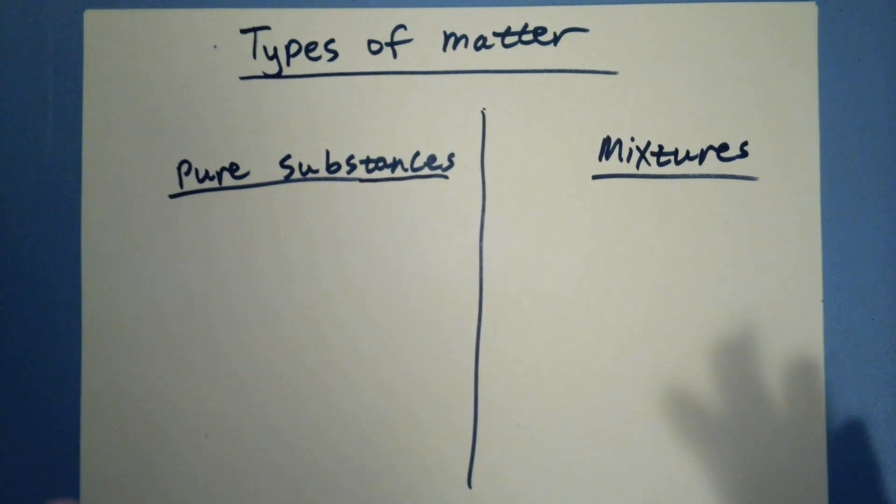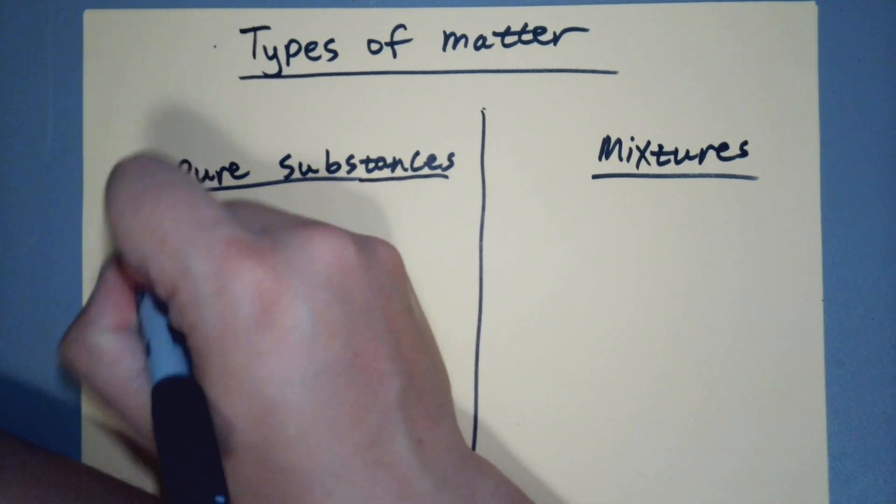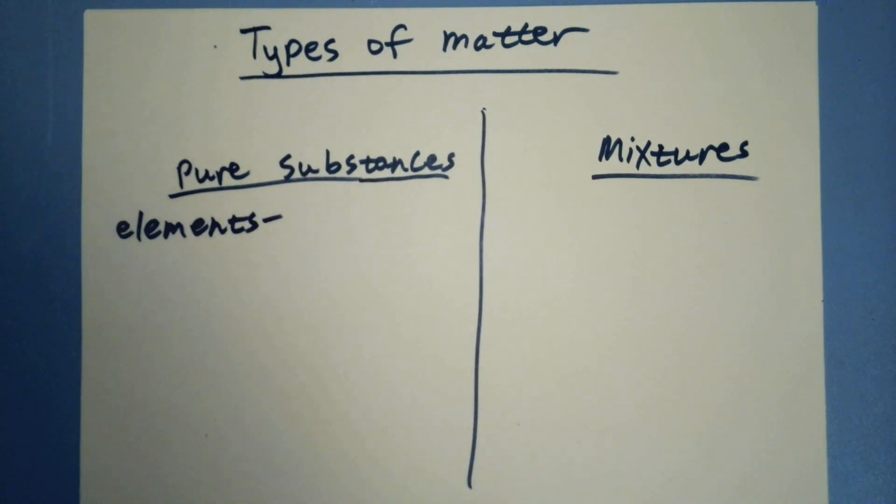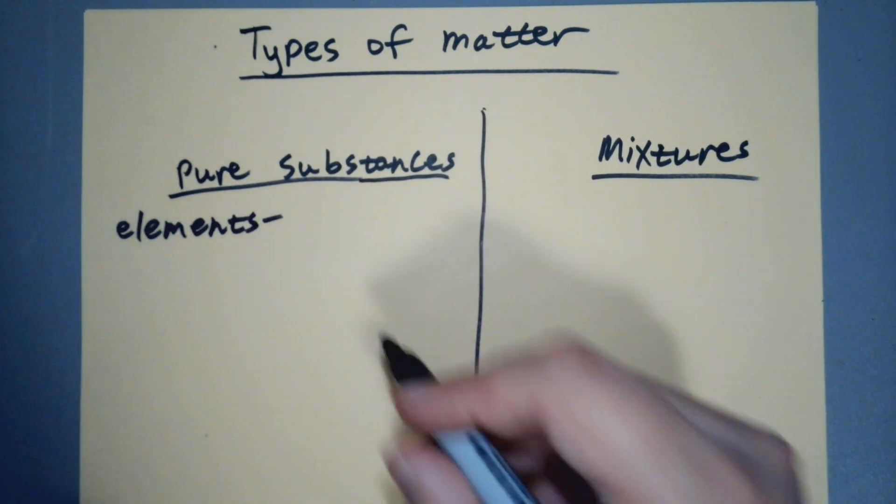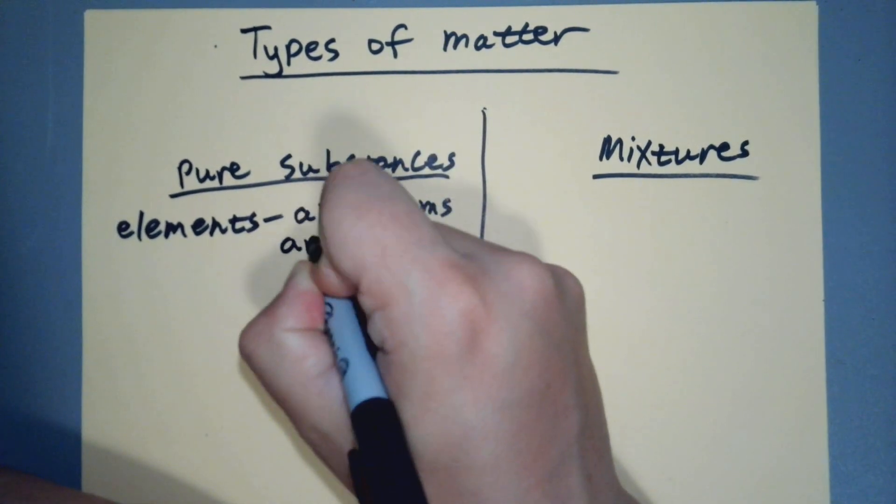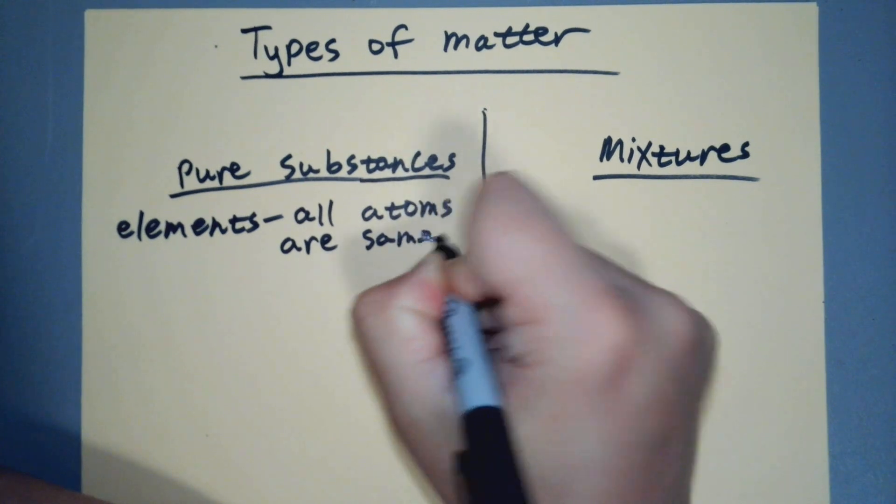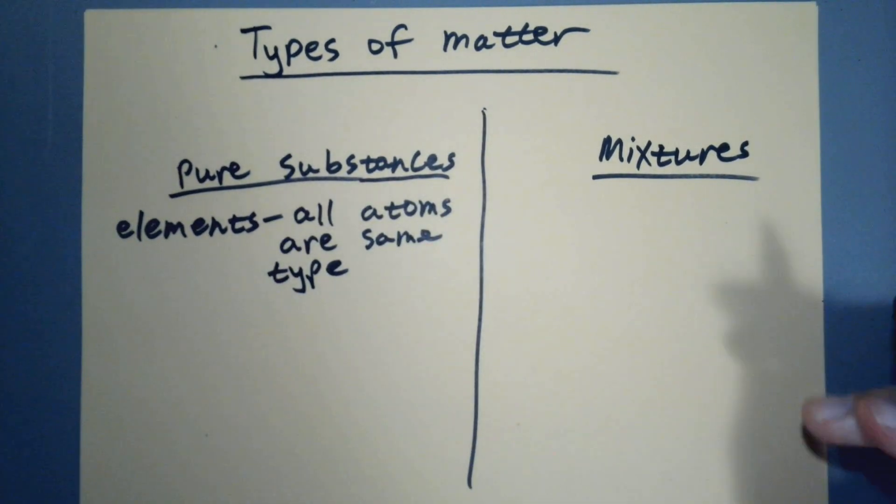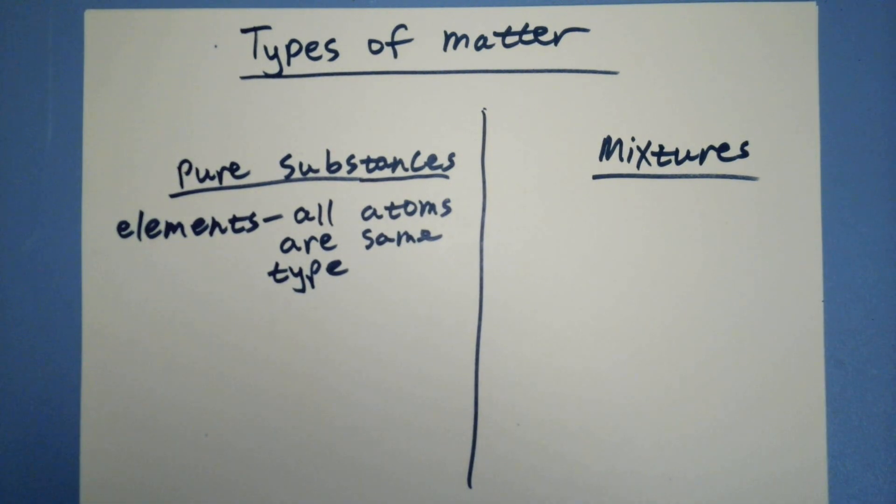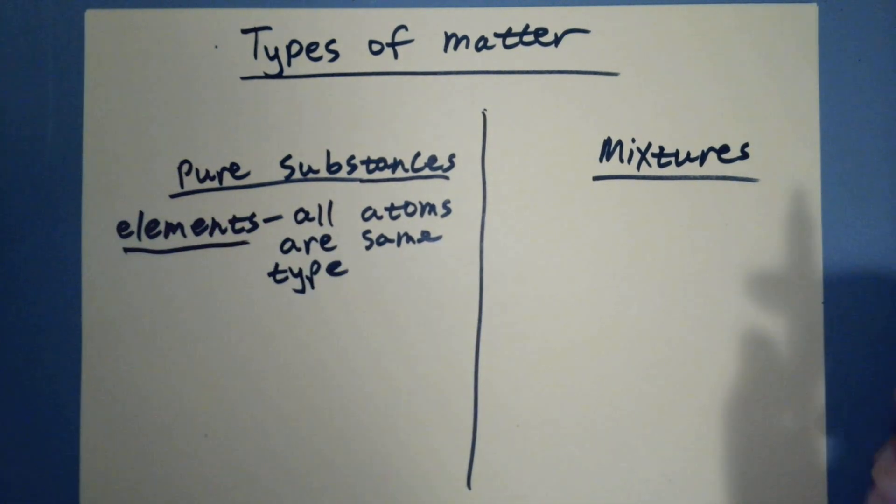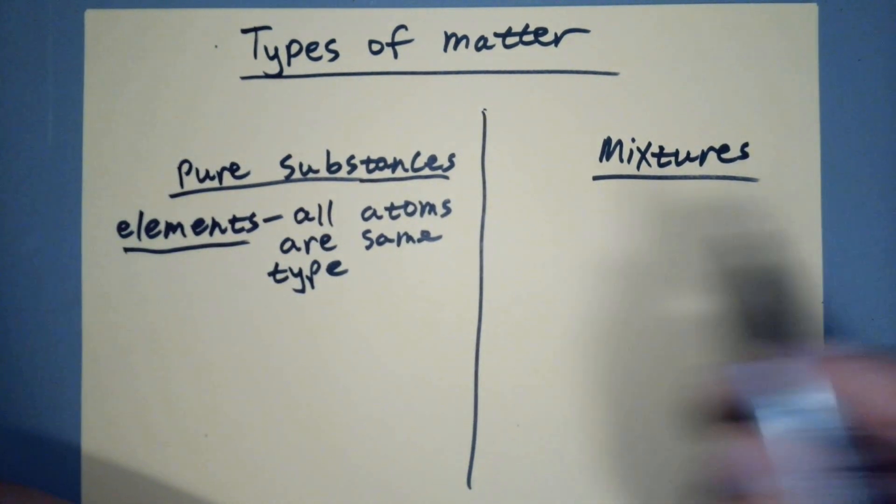There's a couple different kinds of pure substances. The first one are elements, and a pure substance that's an element means that all the atoms are the same type. We're going to come back and really specifically define elements in a couple of videos. Then there are compounds.